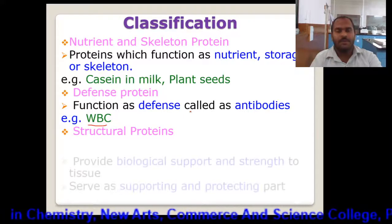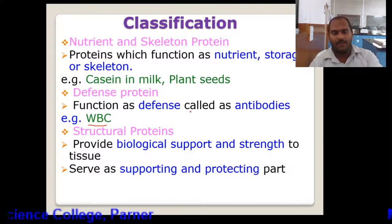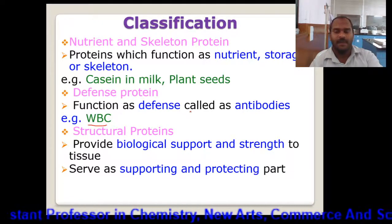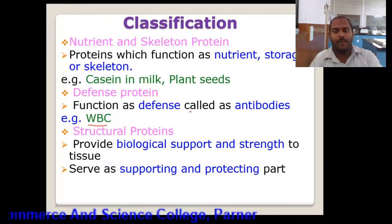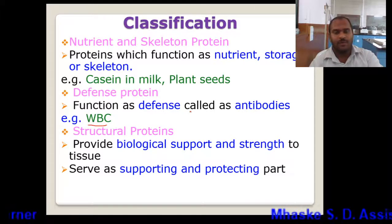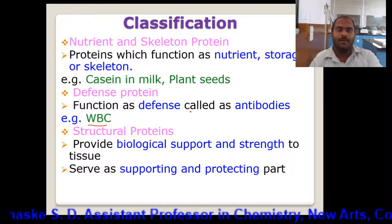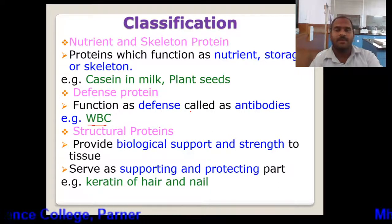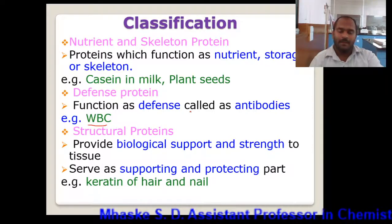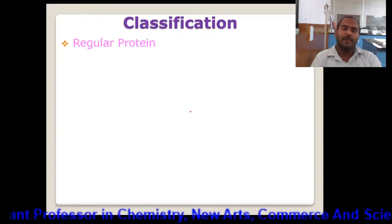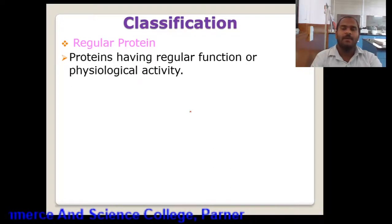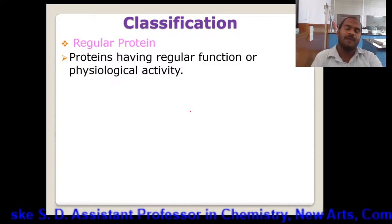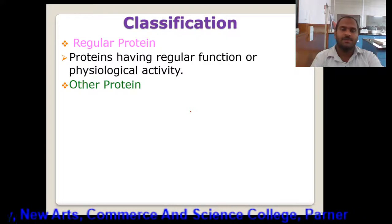The next is structural protein. These are the proteins which provide biological support and strength to the tissue. They also serve as a supporting and protecting part. These proteins are present most of the time in the outer part of the body. For example, keratin of hair and nails, which has the role of support as well as protection. The next class we are considering is regulatory protein. These are the proteins having a regulatory function or physiological activity. They perform regular functions of the body or physiological activity, so they are called regulatory proteins.